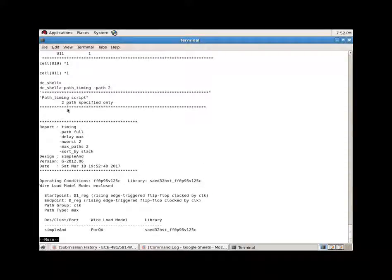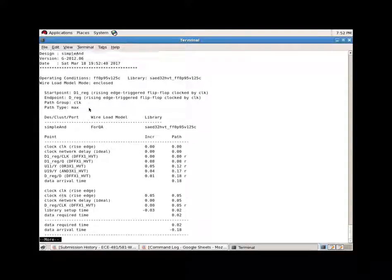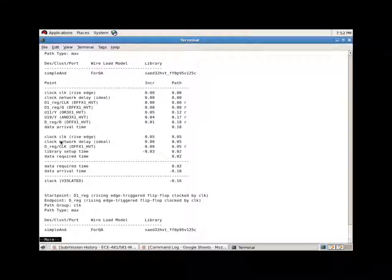Now let's see what happens for two paths. Indeed, the program shows we input two paths and it is shown here. Just keep an eye on the combinational blocks here. We have U11 and U19. There are two blocks now.